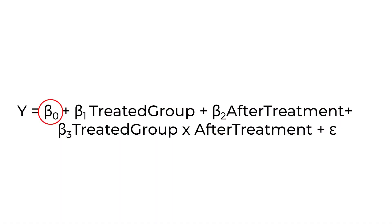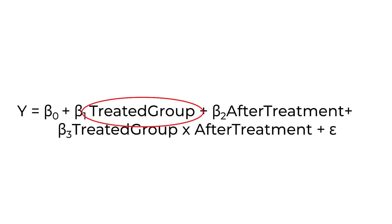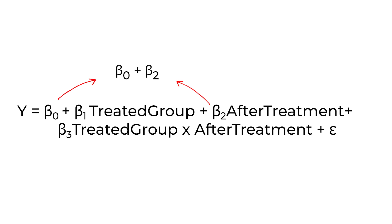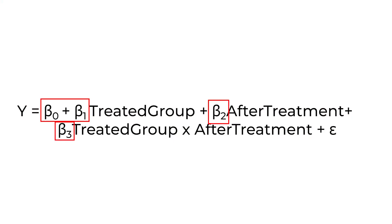Setting treated group to 0 and after treatment to 0 gives the untreated group before — so beta 0 is the average outcome for non-California states before treatment. Setting treated group to 1 gives beta 0 plus beta 1, so beta 1 is the baseline difference between treated and untreated groups. Setting after treatment to 1 with treated group at 0 gives beta 0 plus beta 2 — the untreated group's average after treatment. With both equal to 1, beta 0 plus beta 1 plus beta 2 plus beta 3 is the treated group's post-treatment average.